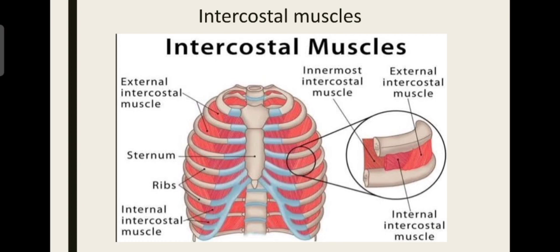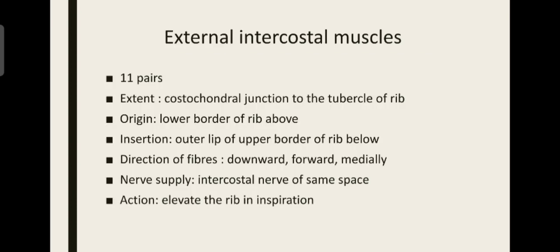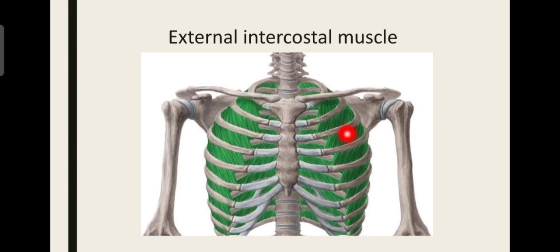The intercostal muscle lies between the 2 ribs. There are different types: external intercostal, internal intercostal, and innermost intercostal muscles. The innermost intercostal muscle is also called intercostalis intimus. There are 11 pairs of external intercostal muscles. For intercostal muscles you should know the origin, insertion, nerve supply, and direction of fibers, as well as the extent, because these differ with each muscle. The external intercostal muscle extends from the costochondral junction to the tubercle of the rib. The costochondral junction is the junction between the rib and the costal cartilage. It extends from there to the neck of the rib, which is present on the backside.